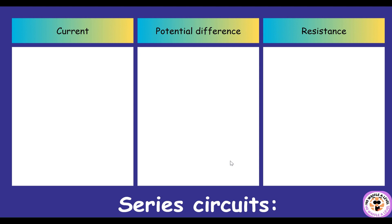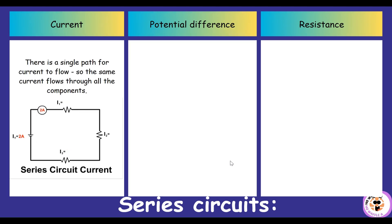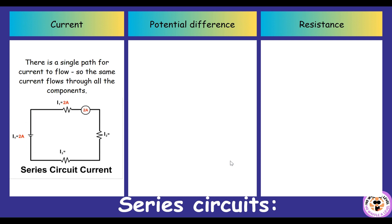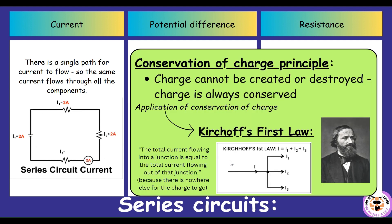In a series circuit there's only one path for all of the electrons to flow — only one path for the charge to flow, and therefore only one path for a current to flow. Therefore the same current is going to flow through all the components. The electrons have nowhere else to go, so they can only travel that one way. This can be explained by the conservation of charge principle.